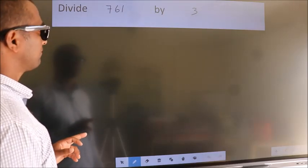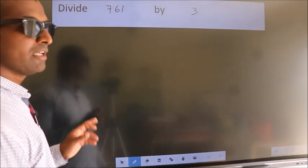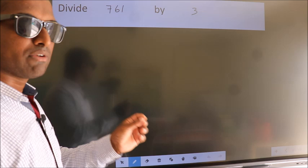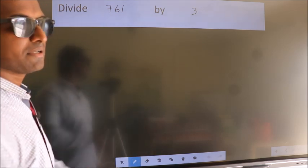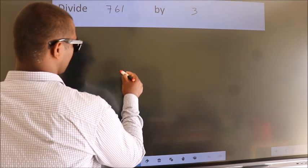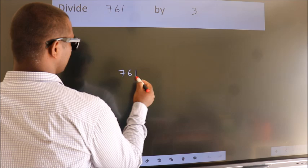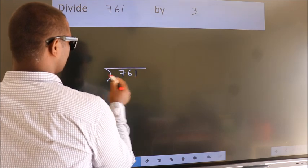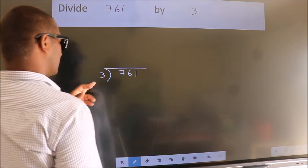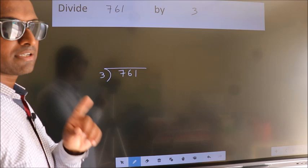Divide 761 by 3. To do this division, we should frame it in this way. 761 here, 3 here. This is your step 1.